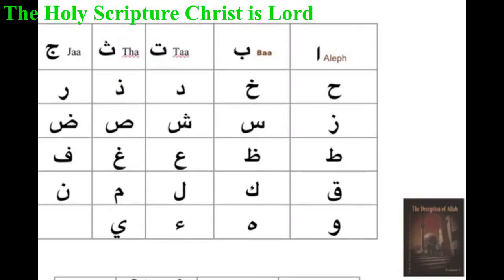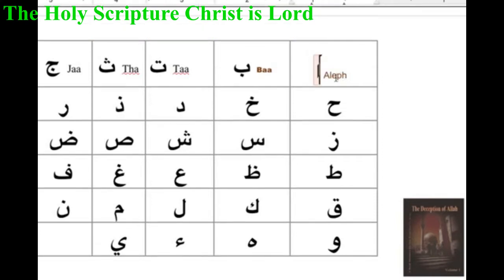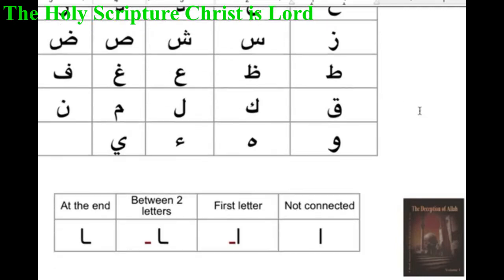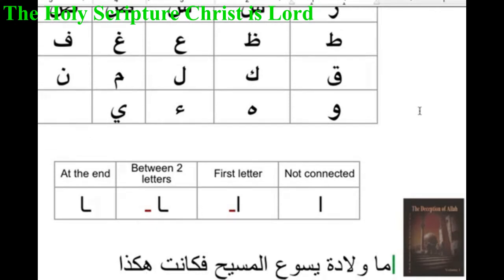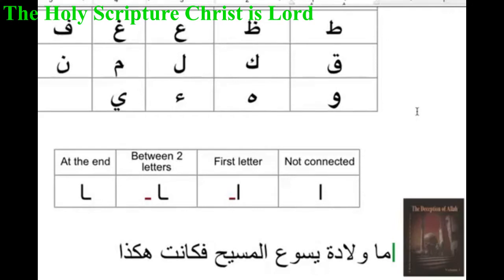Hello everyone, peace of Christ to all. Today we are going to have our second class in Arabic. Last time we spoke about the letter Alif, which is supposedly 'alif' as a word — equal to 'a'. But remember, in Arabic we don't have just 'a'. Before we go to the second letter, just to refresh your memory and clear any confusion: in Arabic there are a few letters that don't accept to be connected from the left, and this is one of them. I will give you an example of those letters as a quick info.